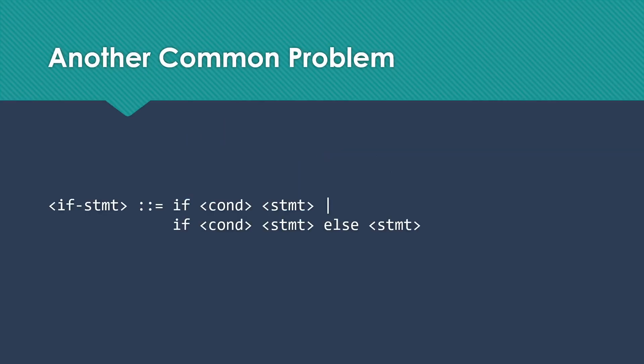Now there is another very common problem that we'll see in programming languages in terms of ambiguity, and that happens in if statements. So if we think about an if statement where we might have just an if, or we might allow for an if else, this would be a really common way for us to write that grammar. But it turns out that this is ambiguous.